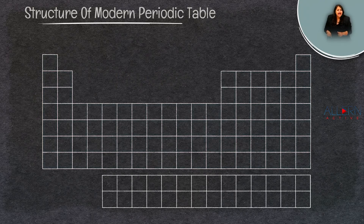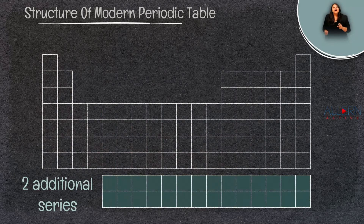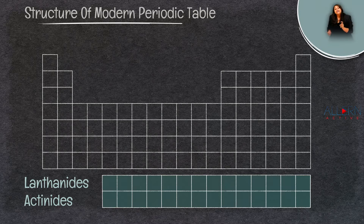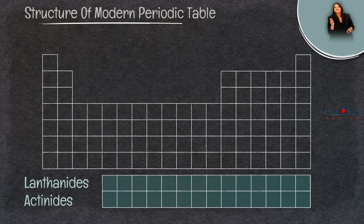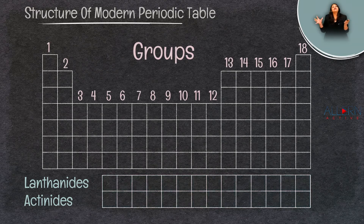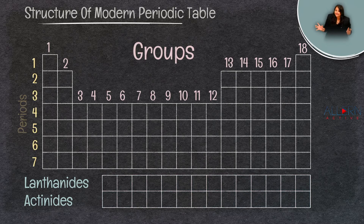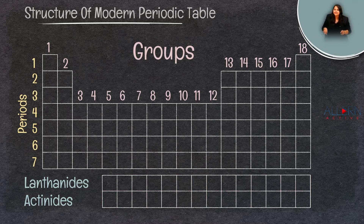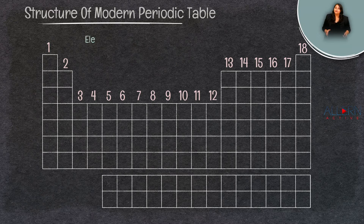You might be wondering what happened to these two rows at the bottom. These are a different series called the lanthanide and the actinide series. All of these — the groups, the periods, the lanthanide and the actinide series — together constitute the structure of the modern periodic table.